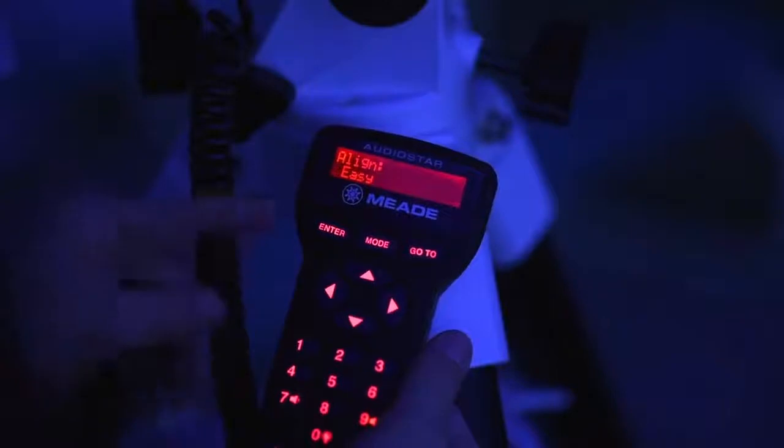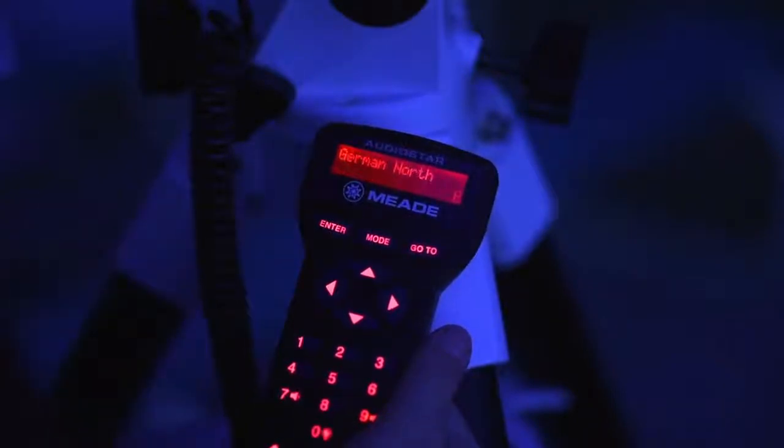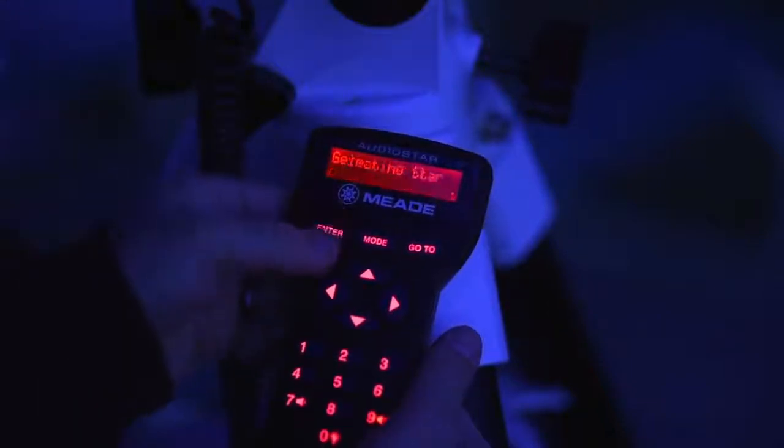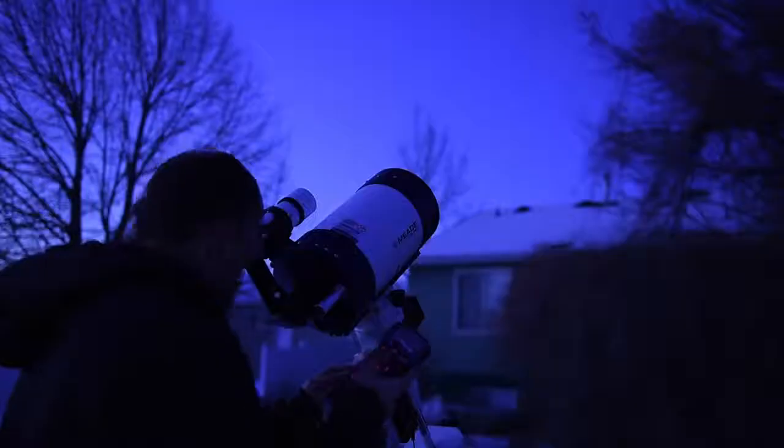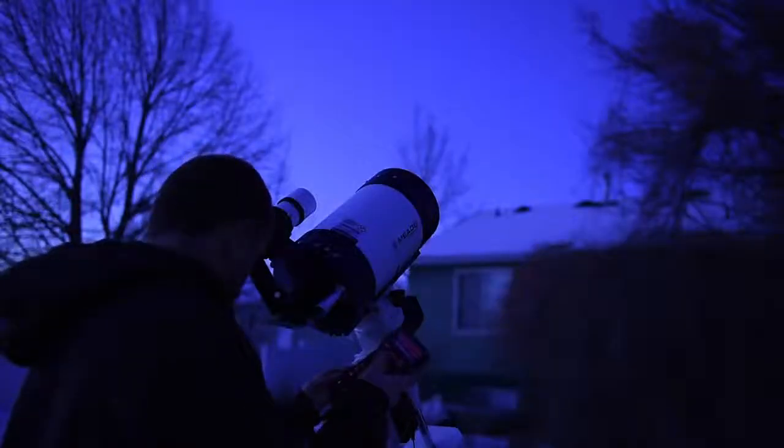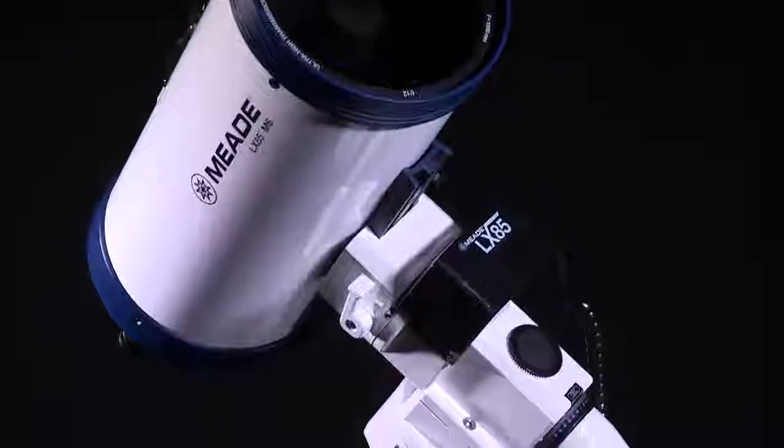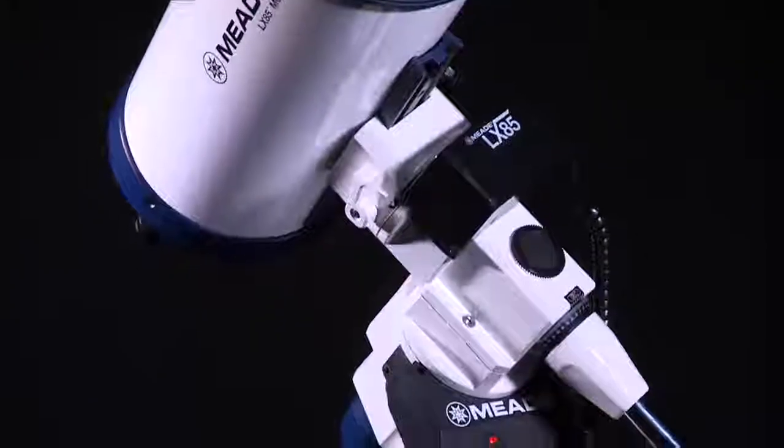Once AudioStar has completed initialization, the easy alignment can be started by going to the Setup Align menu and selecting Easy. With this alignment method, the telescope will select two bright alignment stars and slew to them. While looking through the finder, use the central arrow keys to center the alignment star in the finder. When centering the alignment star, select the proper motor slew speed. To change the slew speed, press numbers 1 through 9 to select the desired slew speed.